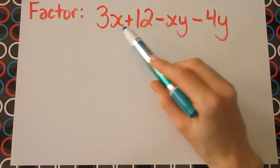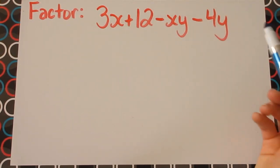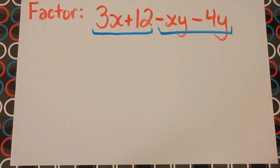Once again, we can see that we have four terms, and there isn't a common factor between all four that we're able to remove. So let's take a look at the first group together, and then we'll look at the second group together. So for the first group, we have 3x plus 12.